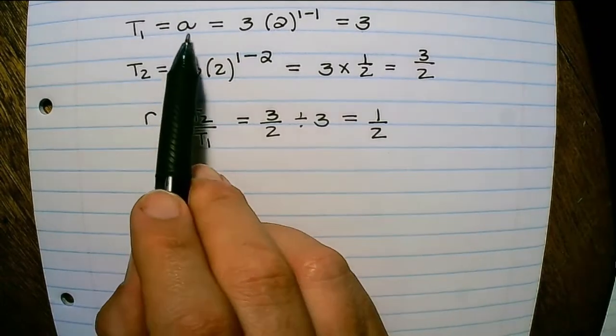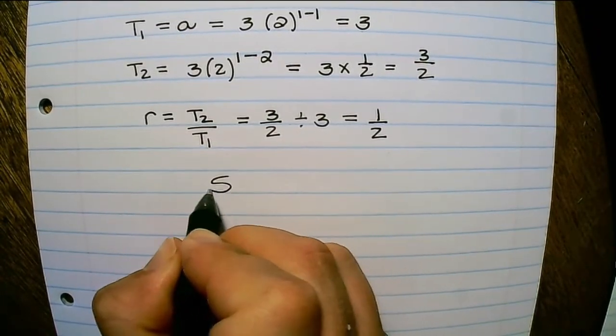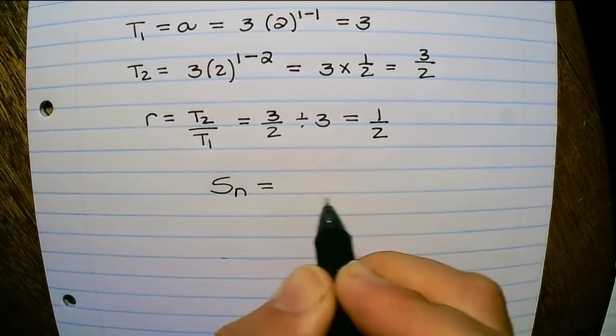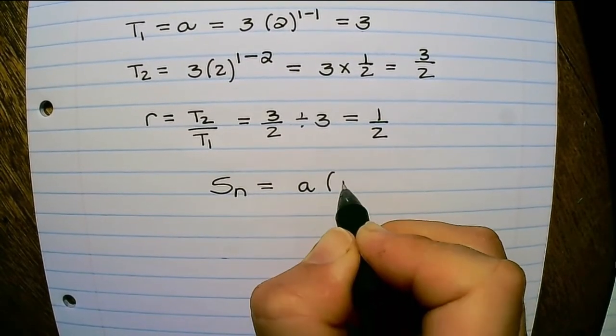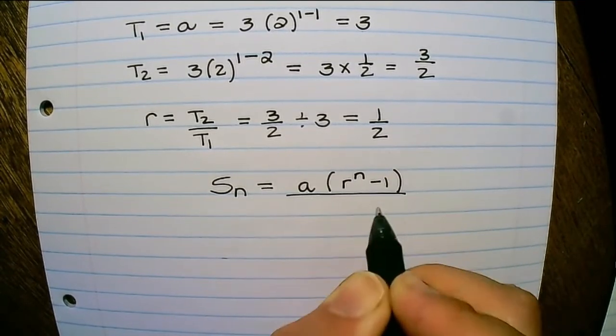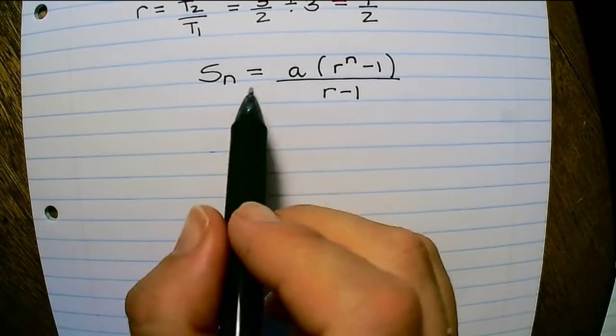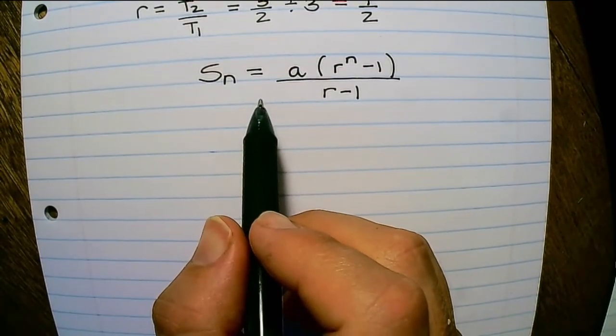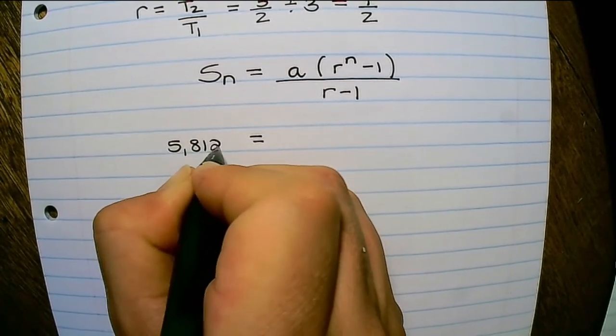Now that I have the a value and the r value, I can find the sum of a geometric pattern, which is a times r to the power of n minus 1 over r minus 1. And the question is to solve n. So we know that the sum is equal to 5.8125.